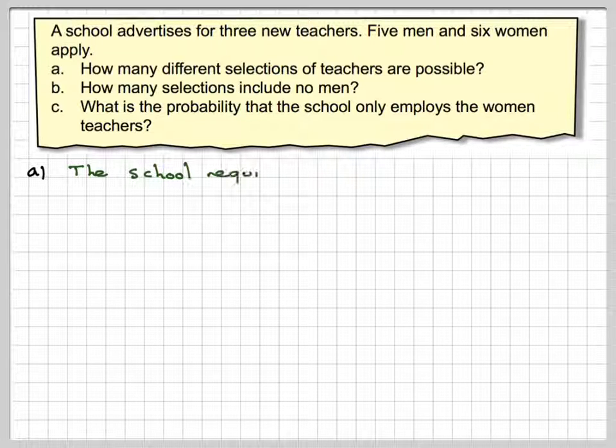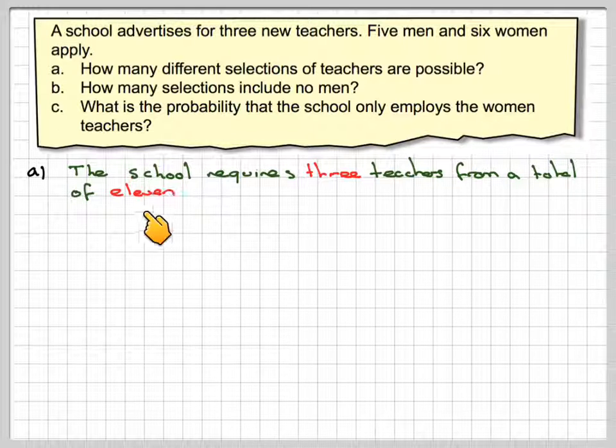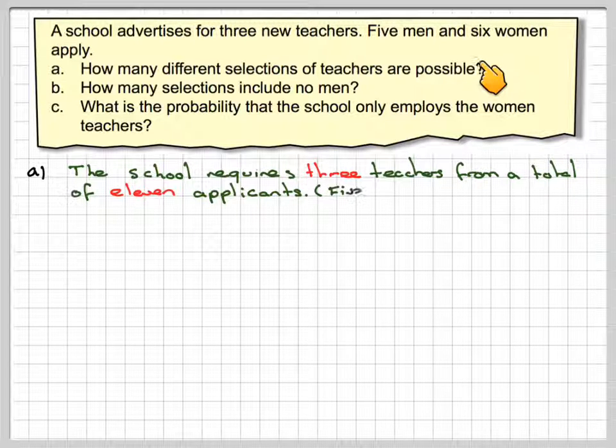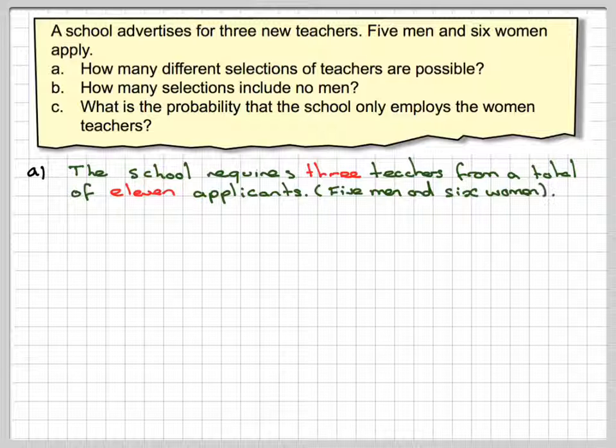Okay, all these questions are related to each other. The school requires three teachers from a total of 11. There are 11 teachers, five men plus six women. It needs to select three, so the total number of ways of choosing will be 11C3.